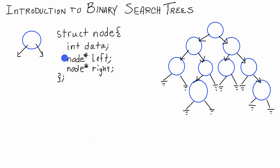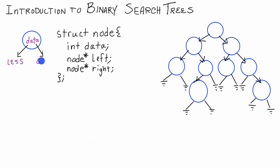Now that the node is the basic building block of a binary search tree, let's talk about the properties of a binary search tree. The properties are pretty simple and have to do with the data or values stored in each node. The property is that all of the nodes attached to the left pointer are going to be less than the value stored in the data variable of this node. And all the nodes in the right subtree, connected by the right pointer, are going to be greater than the value stored in the data variable of this node.